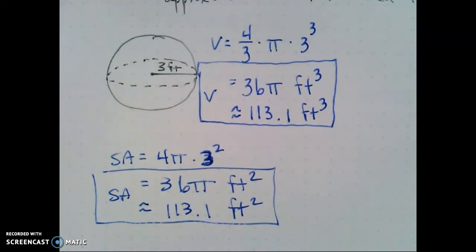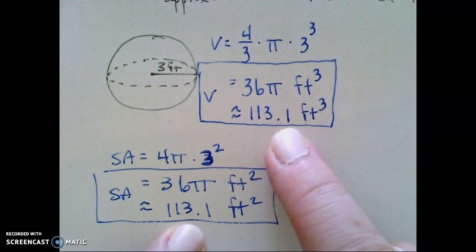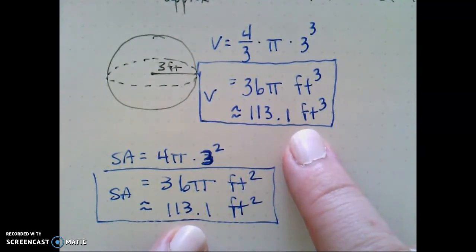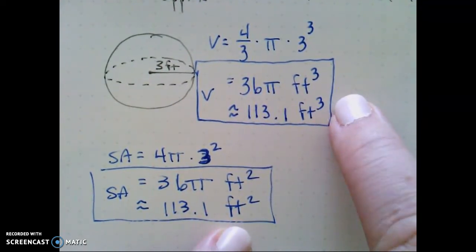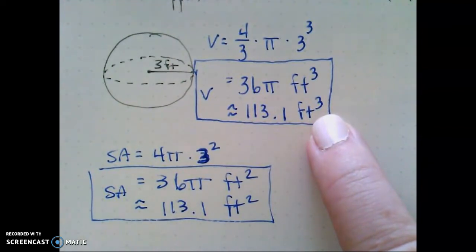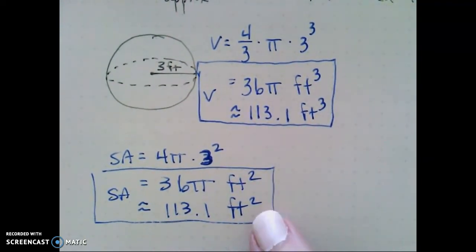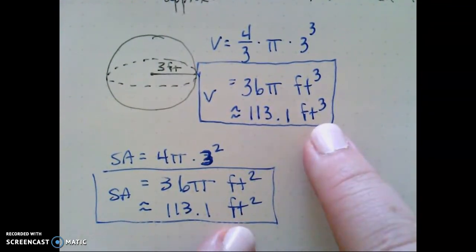All right, so here's our first example, using the appropriate formulas. One of the things that caught my attention with this problem is the fact that I end up with what seems like exact same answers, but these are not the same. What makes them different? Well, it's their units. Just because we have the same numerical answers does not mean we have identical answers, because the units are different. For volume, that is a cubic unit. For surface area, that is a square unit. These are nowhere near the same values because of the units.